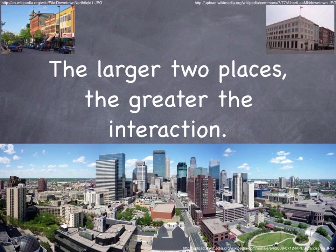The other thing to keep in mind is that the larger the two places, the greater the interaction. If you compare two places of equal size — two towns of 20,000 people and a third of 500,000 — the town which is closer to the city will have more trips to the city. In this example, Northfield will have many more trips than Albert Lea to the city of Minneapolis, despite their similar populations.